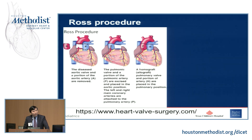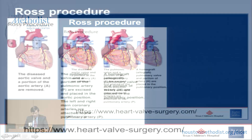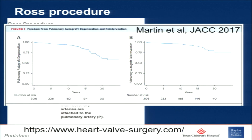The Ross procedure involves taking the patient's own pulmonary valve — assuming it's adequate size with no significant disease or insufficiency — placing it into the aortic position, re-implanting the coronary cusps, and putting a homograft into the pulmonary position. A recent 25-year follow-up from Dr. Martin of over 300 patients showed roughly 20 years as the 50% half-life of degeneration, and only half of those required re-intervention, giving more longevity than typical bioprosthetic valves at 10 to 15 years.